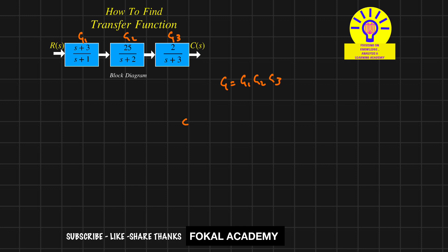We know that transfer function is C of s by R of s, so it is nothing but overall gain. So that's equal to the product of all individual gains, so it becomes s plus 3 divided by s plus